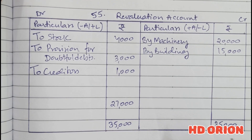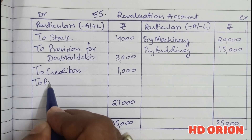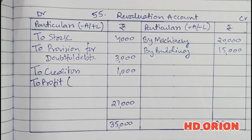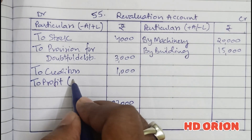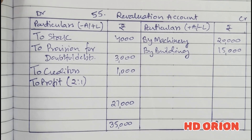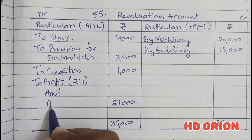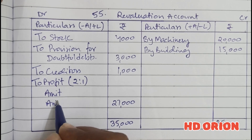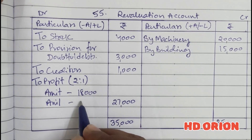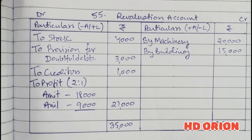This is a credit balance, which means there is a profit on revaluation. It will be given to old partners in their profit sharing ratio of 2 is to 1 — so Amit gets rupees 18,000 and Anil gets rupees 9,000. This completes the revaluation account.